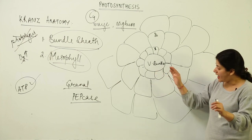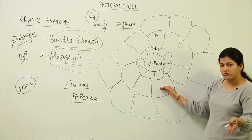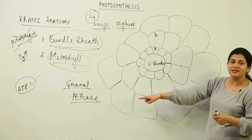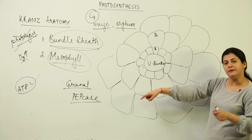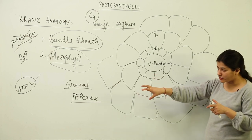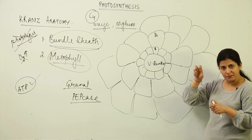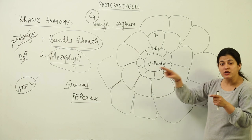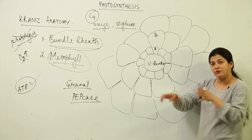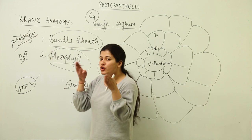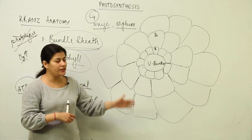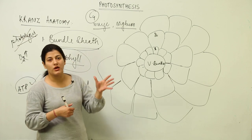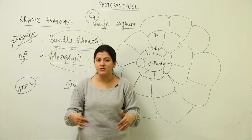Rubisco is restricted to the bundle sheath cells, where there is no oxygen entry. The mesophyll cells, which are in close proximity to oxygen availability, have PEP carboxylase instead of Rubisco. PEP carboxylase takes over the carboxylation activity — carbon dioxide binds in the presence of this enzyme — so that Rubisco's chance of combining with oxygen is totally reduced, thereby increasing productivity.